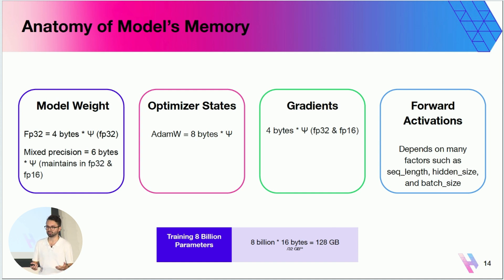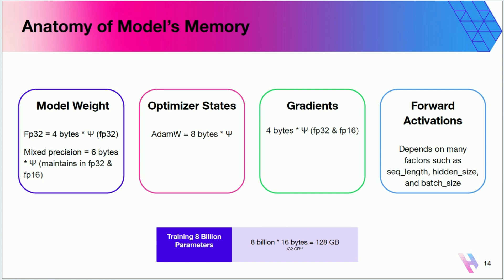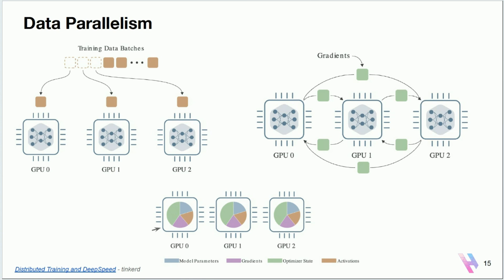You need a lot more memory to train the model than to store model states or during the serving process. In data parallelism, you take your model and replicate it across different GPUs. In this diagram I have GPUs 0, 1, and 2, storing all model parameters, gradients, and weights. Each worker or GPU takes a certain segment of data, performs the forward pass and backward pass on that data, exchanges gradients, and communicates with all the other GPUs — so eventually all GPUs will have the same gradients and parameters. This works well if you can fit your entire model in a single GPU.